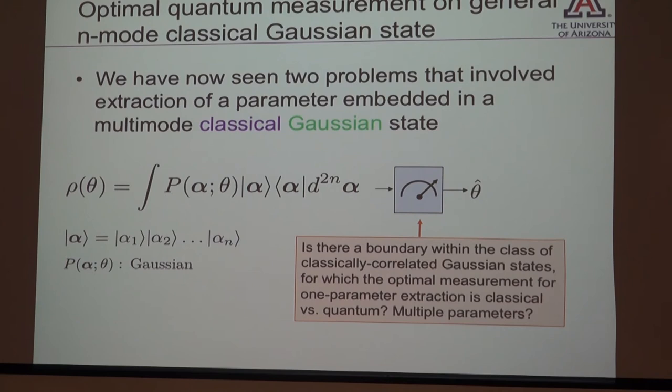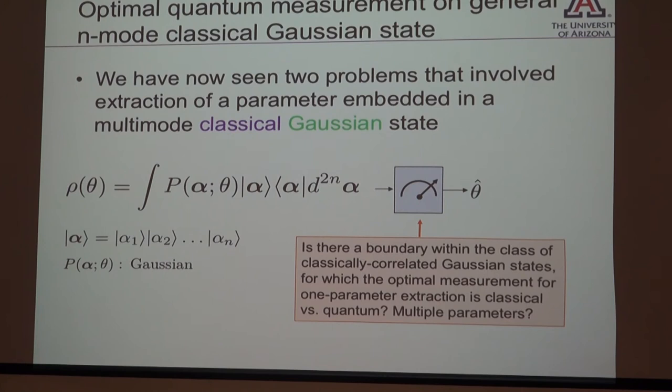Comparing the two problems: in the passive imaging problem and in this active imaging problem, we had a single parameter encoded in an n-mode state, and in both cases the state had a proper P-function representation — a classically correlated thermal state. In one case, the optimal receiver was classically describable; in the other, it was not. This raises the fundamental question: is there a natural boundary in the space of P-functions of classically correlated states separating problems where quantum resources are needed to reach the fundamental performance limit from those where they are not?